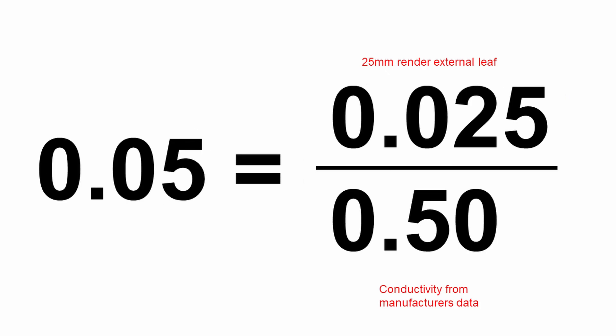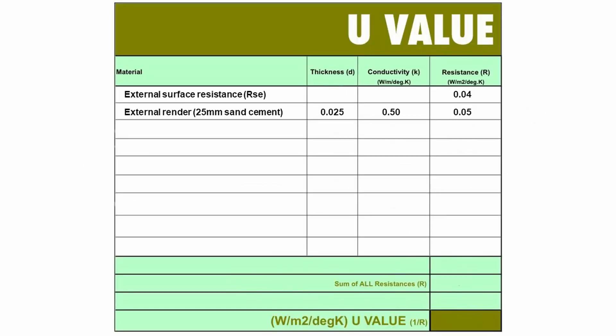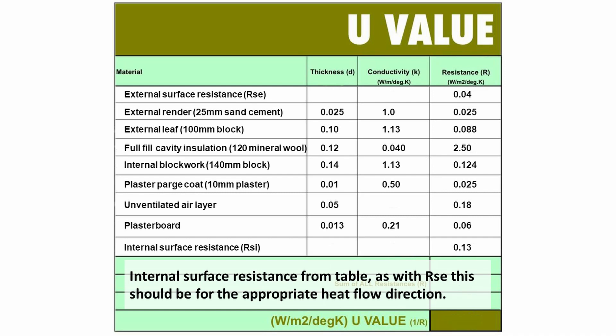So in our case, we have 25 millimetres of external render and we have a conductivity of 0.5, which gives us a value of 0.05. So we can add that into our calculation table. And each layer can then be added in with its corresponding thickness, conductivity and resistance.